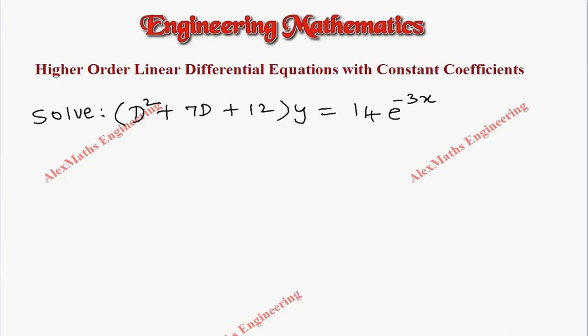Hi students, this is Alex. In this problem, we have to solve (D² + 7D + 12)y = 14e^(-3x). The first step is to write the auxiliary equation.